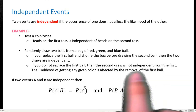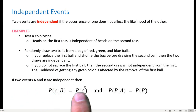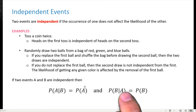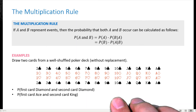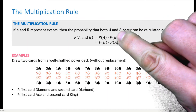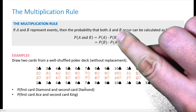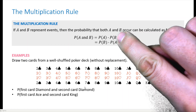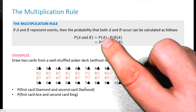If two events are independent, then P(A | B) = P(A) and P(B | A) = P(B). Plugging into the multiplication rule: P(A and B) = P(A) × P(B). This is the simplified multiplication rule for independent events. However, this only applies when the events are independent.